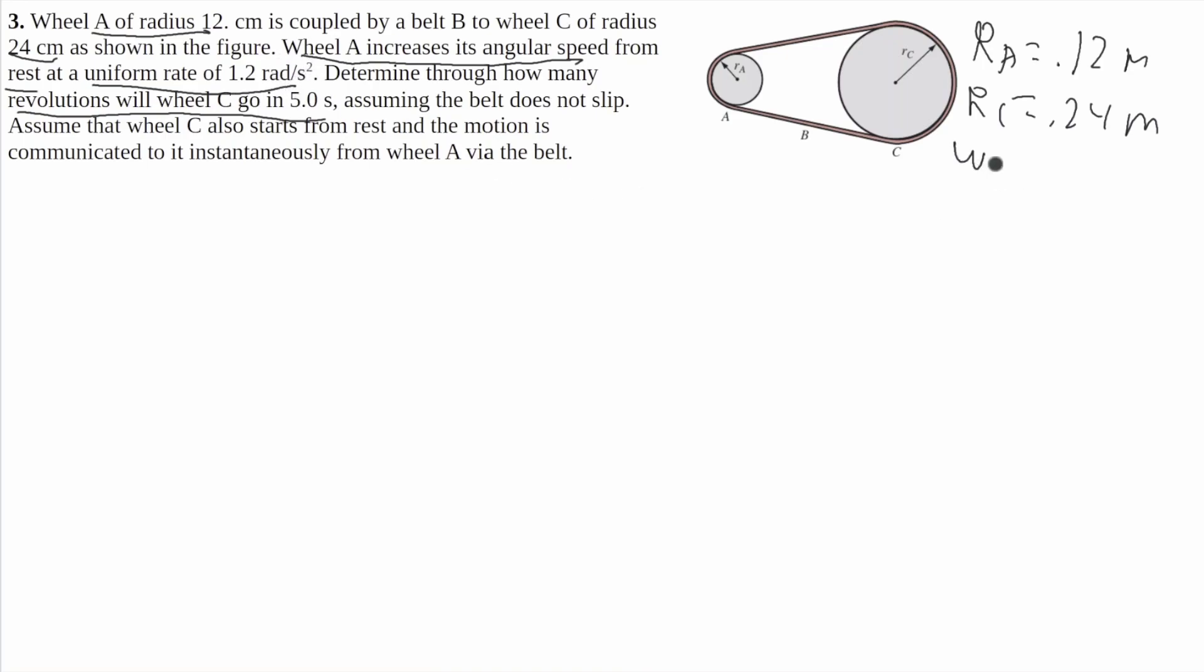So I know that omega naught A is going to be 0, and I know that alpha A is going to be 1.2 radians per second squared. And then I know the time, which is 5 seconds, so T equals 5 seconds. And I'm ultimately searching for theta C, which will be in radians, so we'll have to convert that at the end. This is ultimately the quantity of interest.